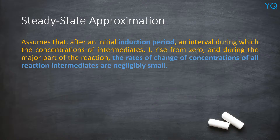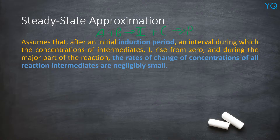What is Steady State Approximation exactly? Let's say you have a reaction, maybe A plus B gives you an intermediate I. Then I reacts with another reactant C and gives you your product. Generally in multiple steps you will have the formation of one or more intermediates.